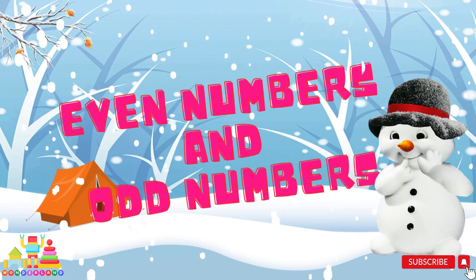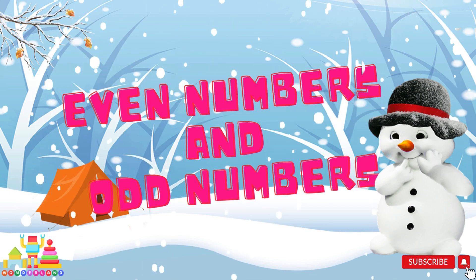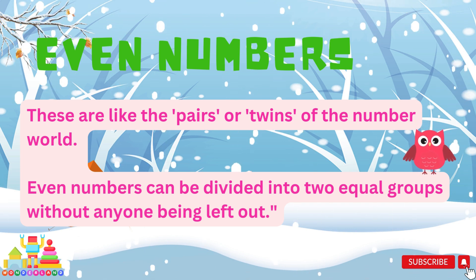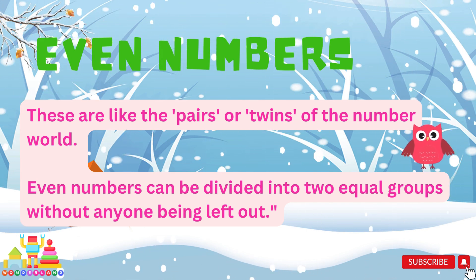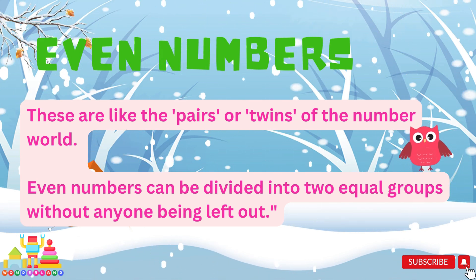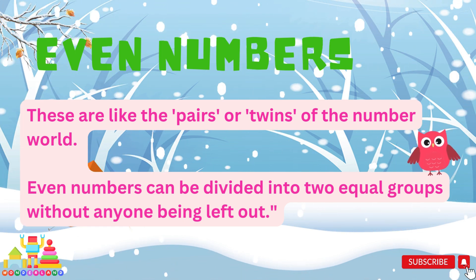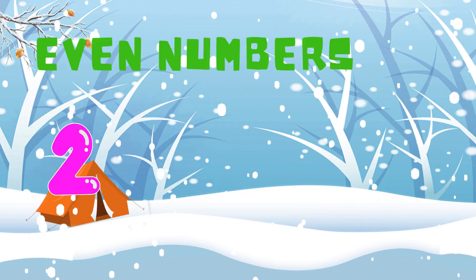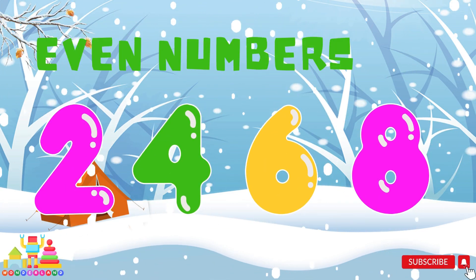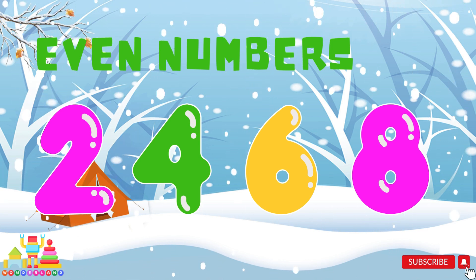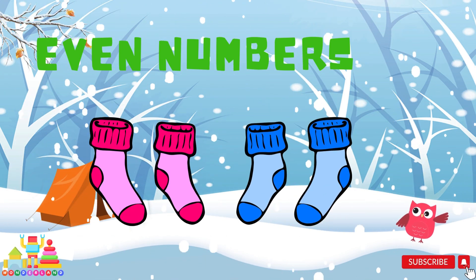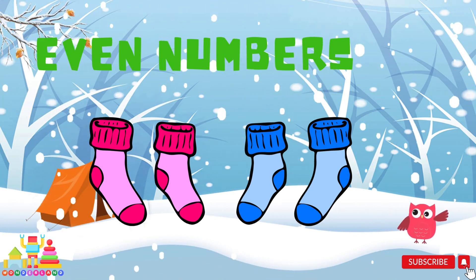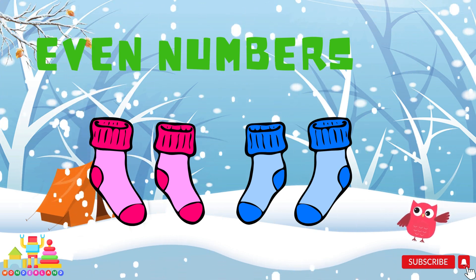Even numbers and odd numbers. Even numbers are like the pairs or twins of the number world. Even numbers can be divided into two equal groups without anyone being left out. For example, a pair of socks is even because no sock is left alone. Two pairs of socks is also an even number.